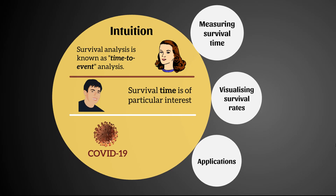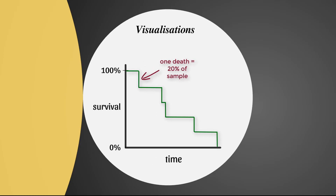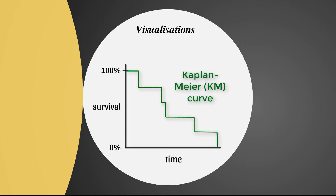Let's visualize these survival rates. On the y-axis we have the survival rate from 0% to 100%. With five people in our sample, each time somebody dies the survival rate dips down 20% — one-fifth. Mapping out the survival rate across time gives us a step-ladder shape: as soon as someone dies, the rate dips 20%. At three years the survival rate is 80%, and at five years it's 40%.